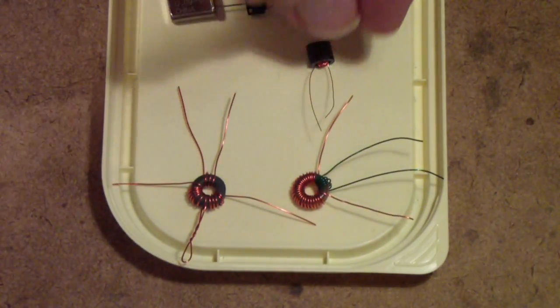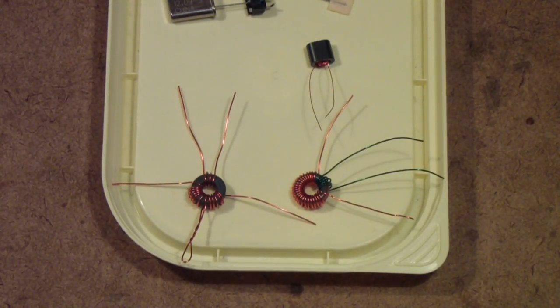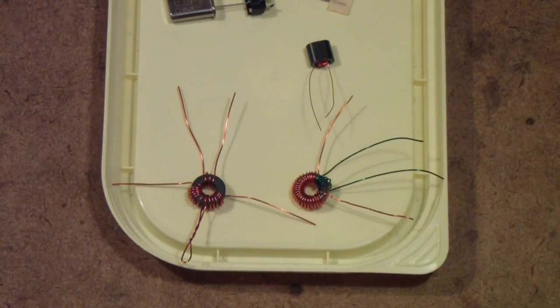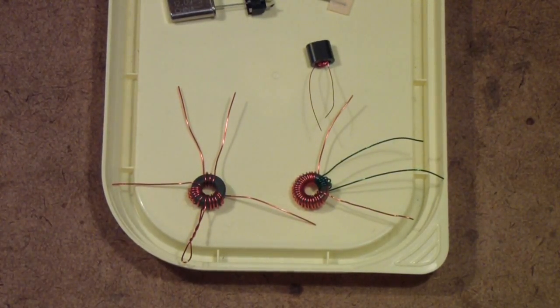Now the reason that I've gone ahead and wired these ahead of time rather than after I've assembled the board is I want to test them to make sure that their properties are roughly what they need to be. If you need more instruction on winding toroids, I suggest Alan W2AEW's website or YouTube videos. He has done a much better job of showing how to do that than I could do. So with that aside, let's move on to assembling the board.